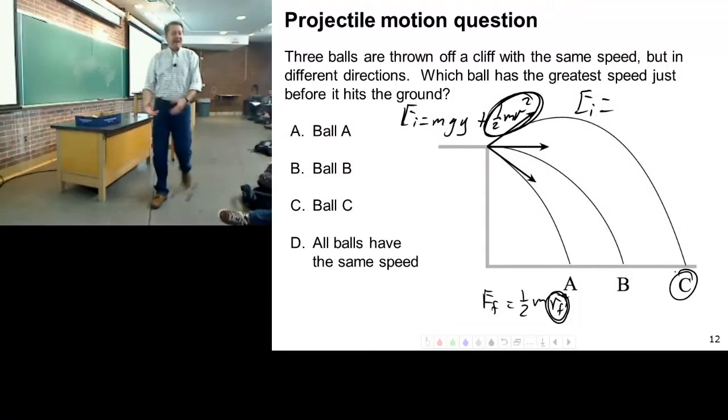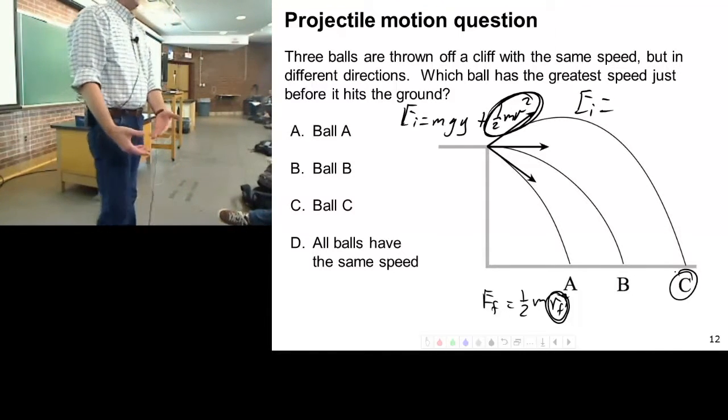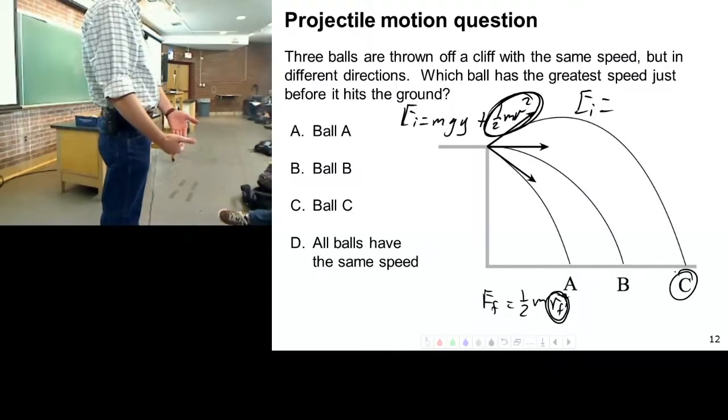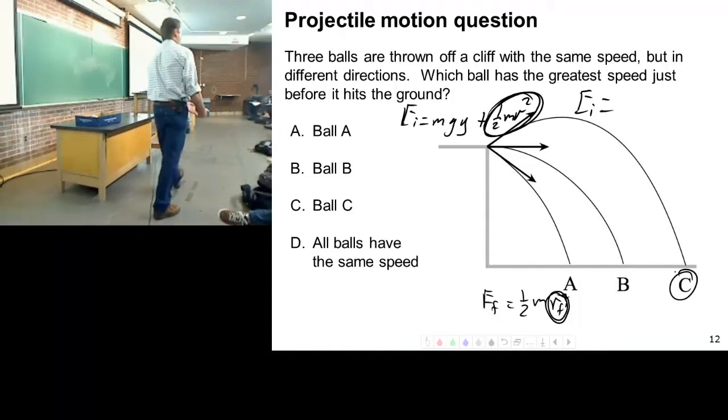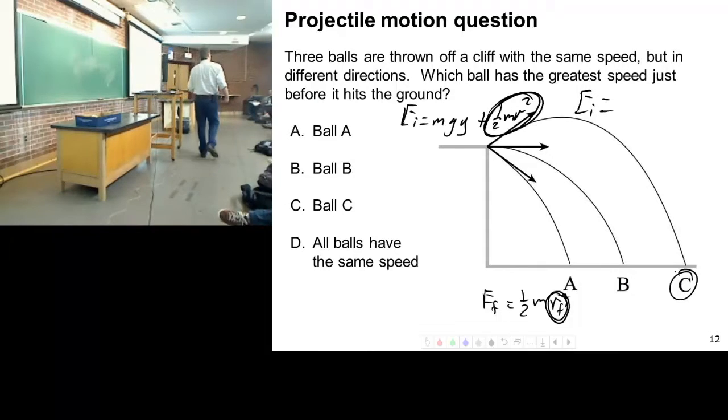Now let's go to the very end. The very end, where do they all end up? On the ground, right? So they all have lost their potential energy, right? They've all lost whatever potential energy they had, they've lost. Which means, where did that potential energy go? Where did it go? It went into the kinetic energy, right? It was converted from potential to kinetic.